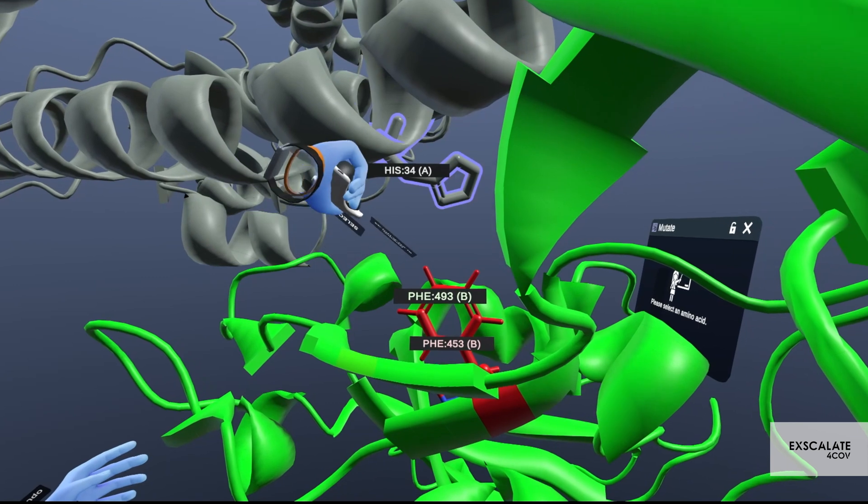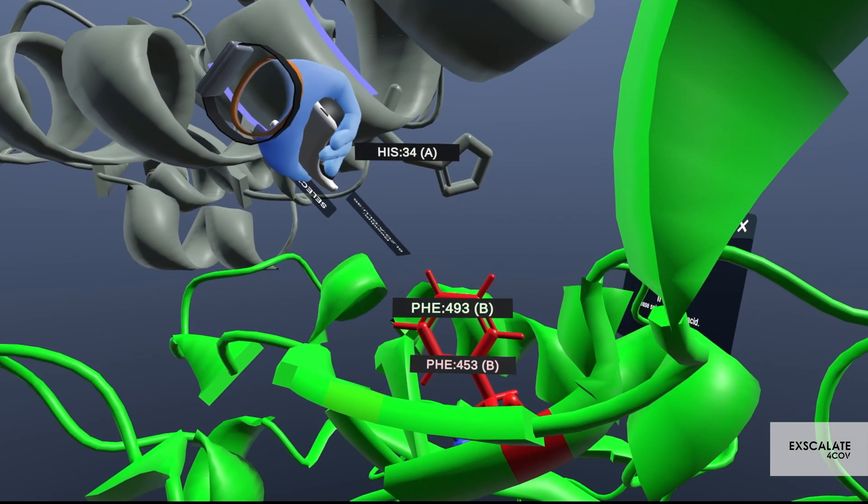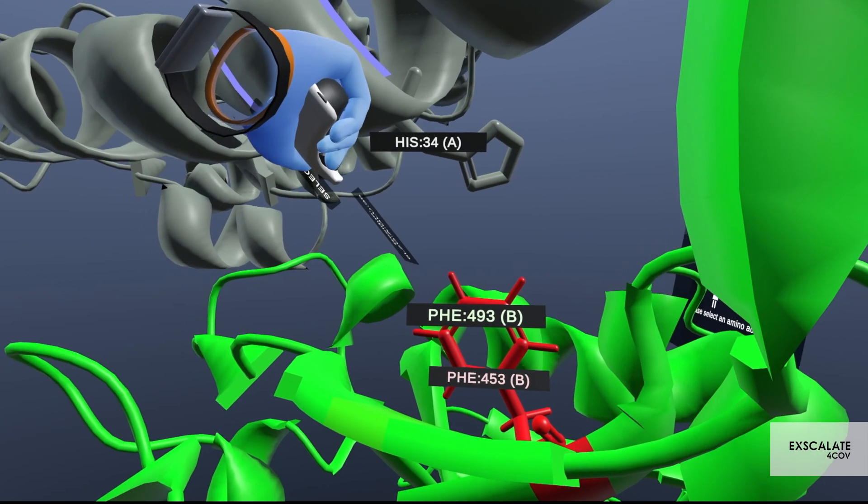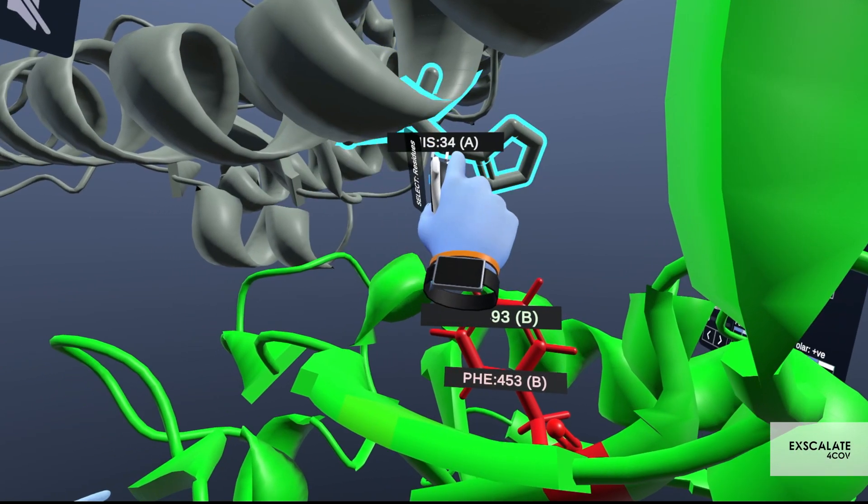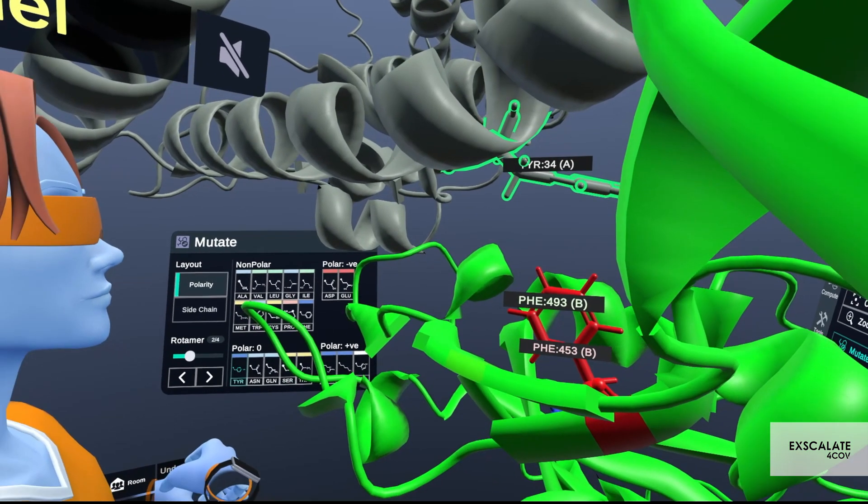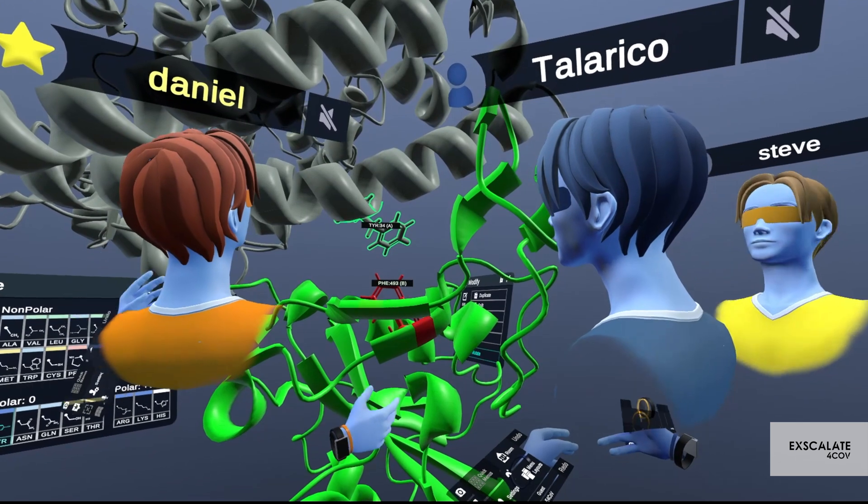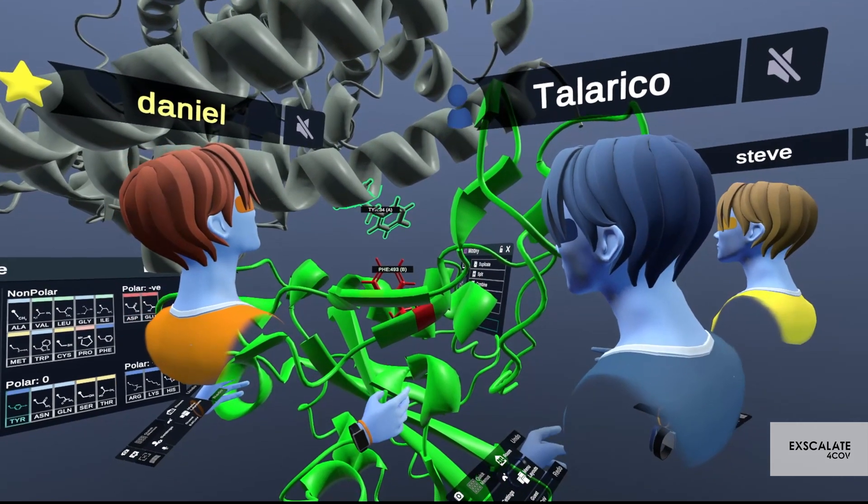We have a human histidine residue here in the ACE2 but then it's a tyrosine actually in mink so we can go ahead and mutate it as well.